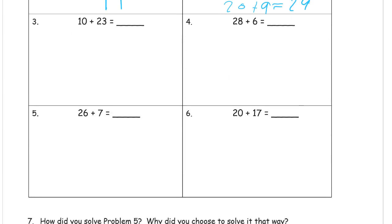10 plus 23. This is going to be really easy with Quick 10s, right? Because it's just 10 and 2 tens and 3 ones. As long as you don't have a lot of ones to draw, Quick 10s can go pretty quickly. And so you're looking to just count the tens first. 30 and then 3 more. 33.